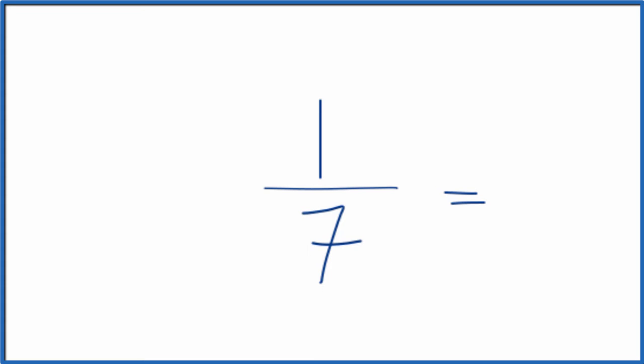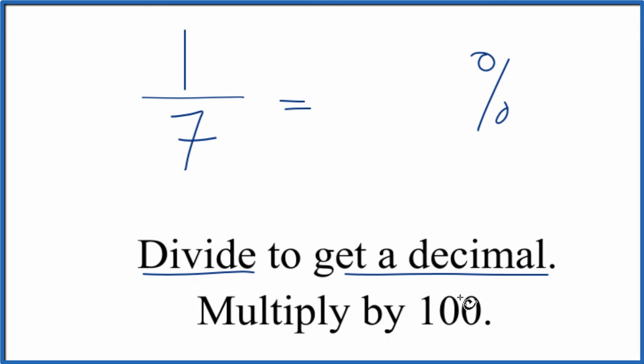To do that, what we can do is divide one by seven and that'll give us a decimal. Then we take that decimal, we multiply by 100, and we have our percent.